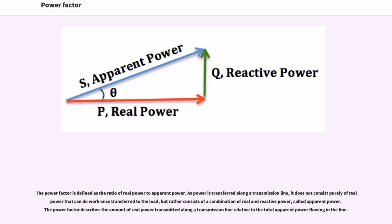The power factor is defined as the ratio of real power to apparent power. As power is transferred along a transmission line, it does not consist purely of real power that can do work once transferred to the load, but rather consists of a combination of real and reactive power, called apparent power. The power factor describes the amount of real power transmitted along a transmission line relative to the total apparent power flowing in the line.